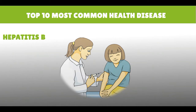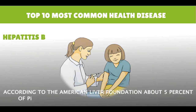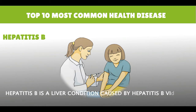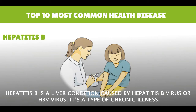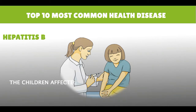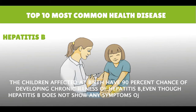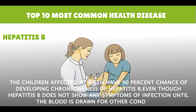Hepatitis B. According to the American Liver Foundation, about 5% of people are suffering from an acute hepatitis B infection. Hepatitis B is a liver condition caused by the hepatitis B virus; it is a type of chronic illness. Children affected at birth have a 90% chance of developing chronic hepatitis B, even though it does not show any symptoms until blood is drawn for another condition.